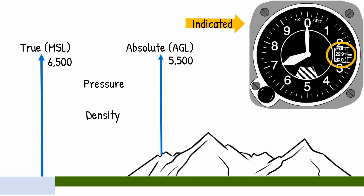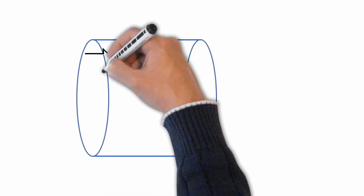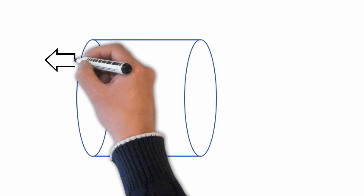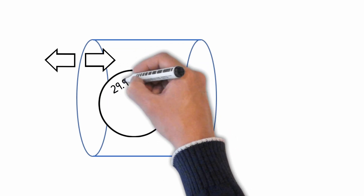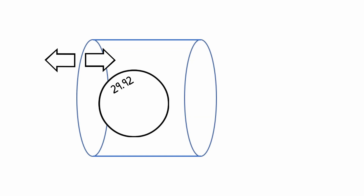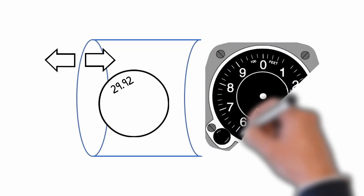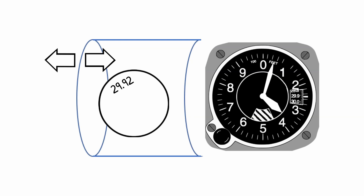The Kollsman window is where you set the altimeter to adjust to non-standard pressures. Now, let's get to know the altimeter a little better. To simplify this lesson, think of the altimeter as a cylinder with a small hole in the back that allows outside air to enter and exit through the aircraft's static port. Inside the cylinder is a couple of aneroid elements. The pressure inside the aneroid element is always equal to 29.92 inches of mercury, or standard pressure. Think of this element as a sealed balloon — no air in or out. The aneroid element is connected by mechanical linkage to the dials on the front of the altimeter, so any expansion or compression of the aneroid element moves the dials.